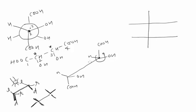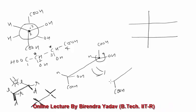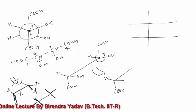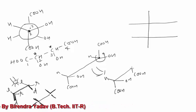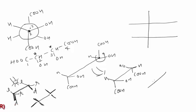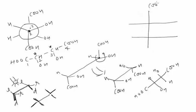So for this Sawhorse projection, since the back carbon has CHO pointing up, we will rotate the molecule so that CHO comes down. Since this is a single bond, rotation is free, so this rotation is allowed. We will convert the Sawhorse projection into eclipsed form. OH will come here, H to the right. Now if you open this: CHO will be here, COOH will be here, OH here, H here, H here, OH here.